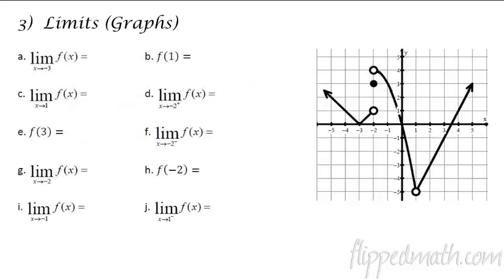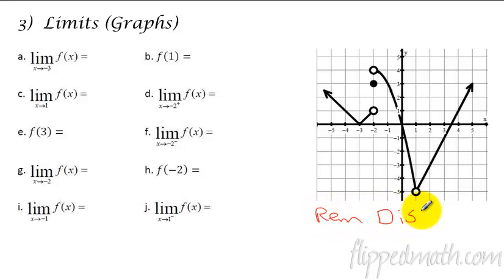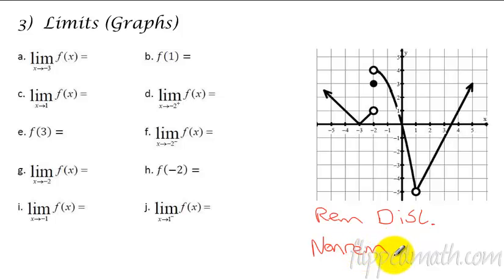In the third lesson, one of the things we did was talk about limits, but we also talked about whether or not a graph is continuous. So just as a quick reminder before we do the limits: if it is a removable discontinuity, that is when you just have a hole. So this one's a removable because if you fill in the hole, then it is continuous.